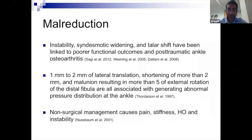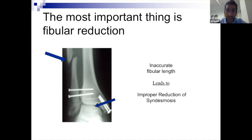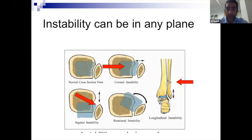Getting fibula length and rotation right, medial reduction right, syndesmosis right, and posterior malleolus and articular surface right are all critical intraoperatively. We know that malreduction of the ankle causes post-traumatic arthritis, ankle pain, stiffness, and instability. The majority of patients with post-traumatic ankle arthritis have had fractures or trauma. Malreduction of the syndesmosis specifically occurs in up to 52% of cases, so it's really important to get syndesmosis fixation right — place screws or tightropes two to four centimeters above the joint, parallel and angled 30 degrees anteriorly.